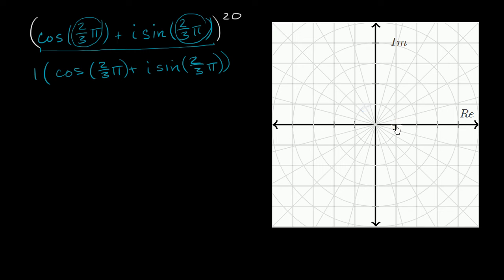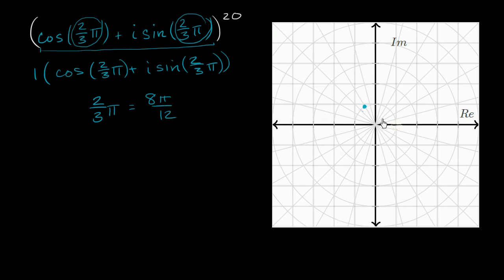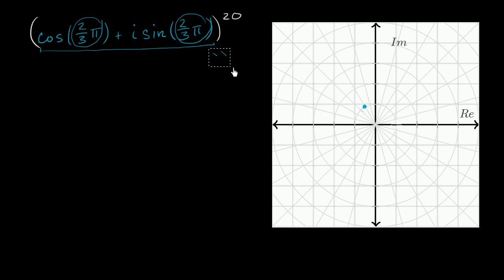So the angle is two-thirds pi. Each of these segments on the complex plane is pi over twelve, so I just counted eight of them — since two-thirds pi equals eight pi over twelve — to get to that point. That's our original complex number plotted. Now let's try to raise it to the twentieth power.